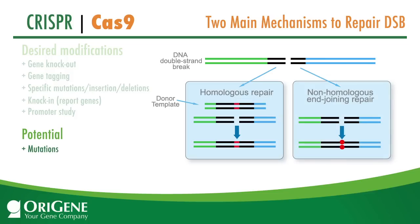Non-homologous end joining, where the ends of the break are joined together, introduces random mutations, insertions, and deletions. This can also be used to create variant libraries.